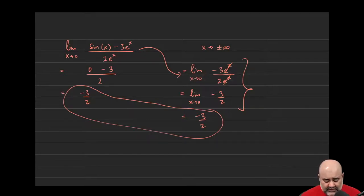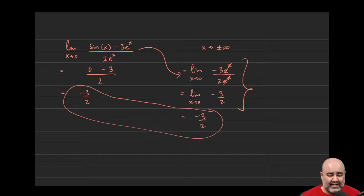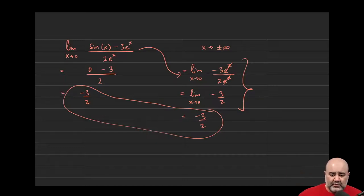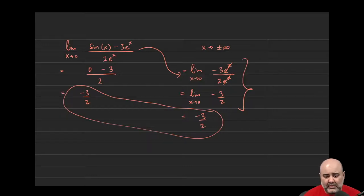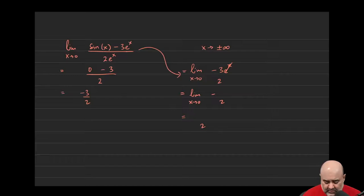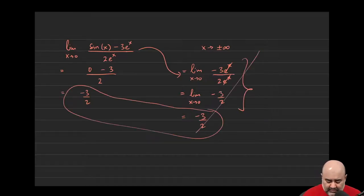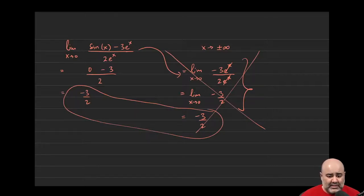Summary: you cannot use dominating terms arguments or relative rates of growth to solve limits where x is not approaching infinity or negative infinity. If x is approaching infinity or negative infinity, then you can say this type of function grows faster than this type, so it'll be the dominating term on top versus the dominating term on the bottom. But otherwise this would be an absolute zero — even though you're getting the right answer, you got lucky.